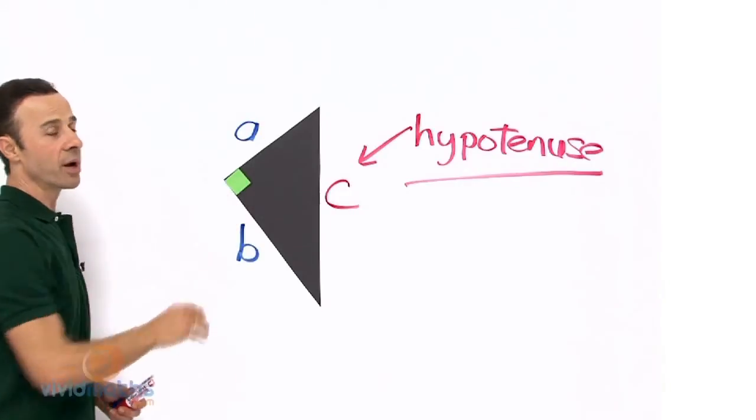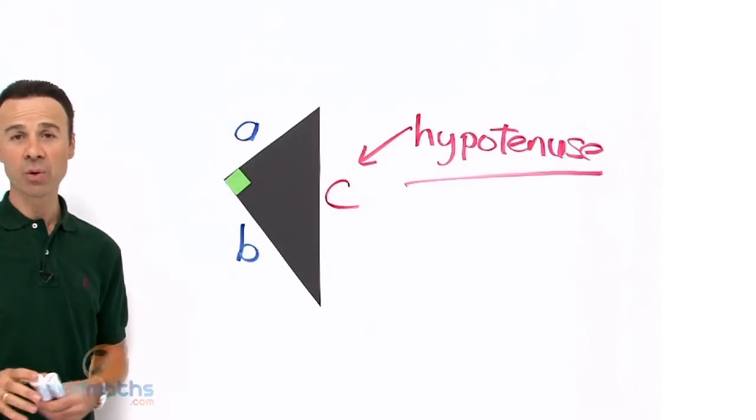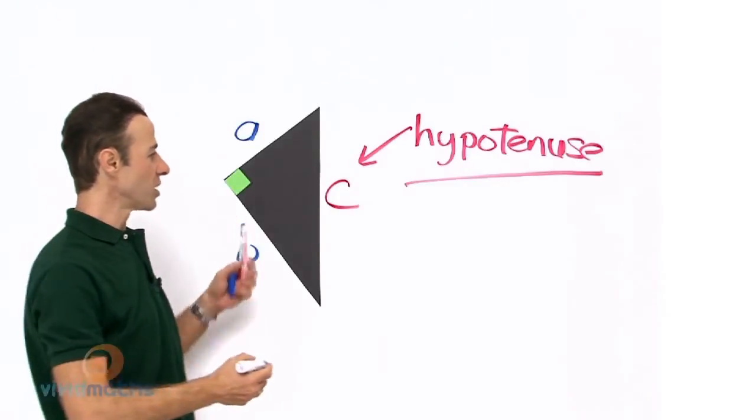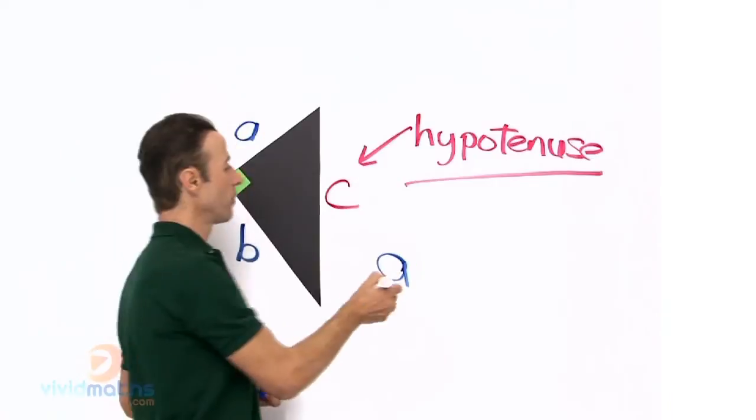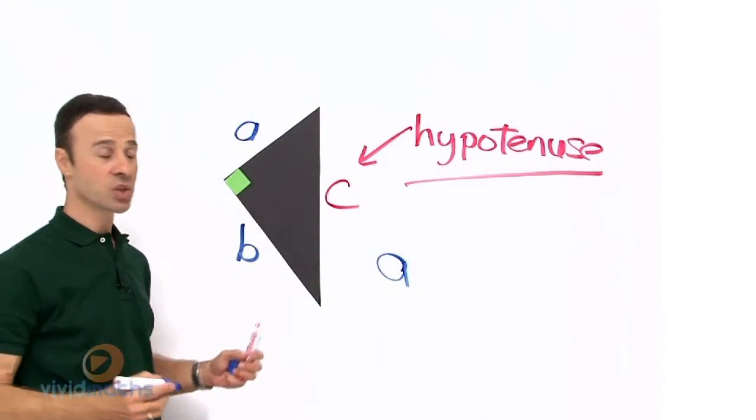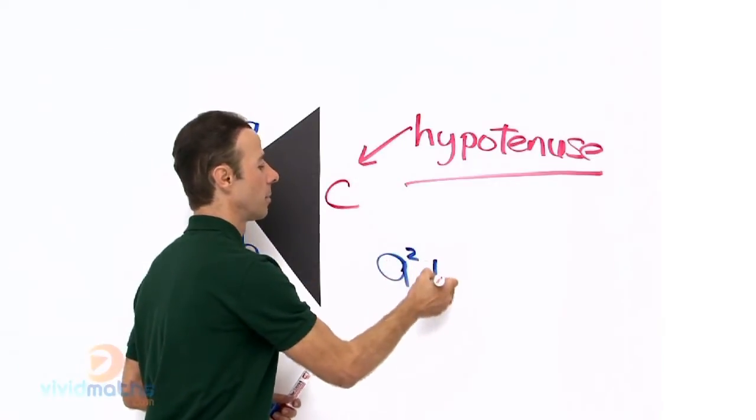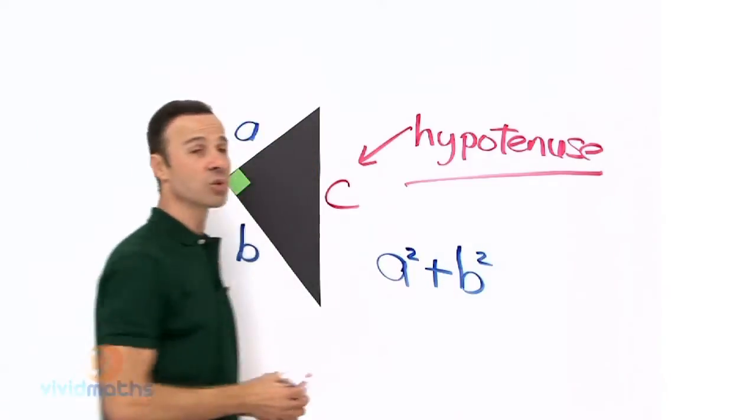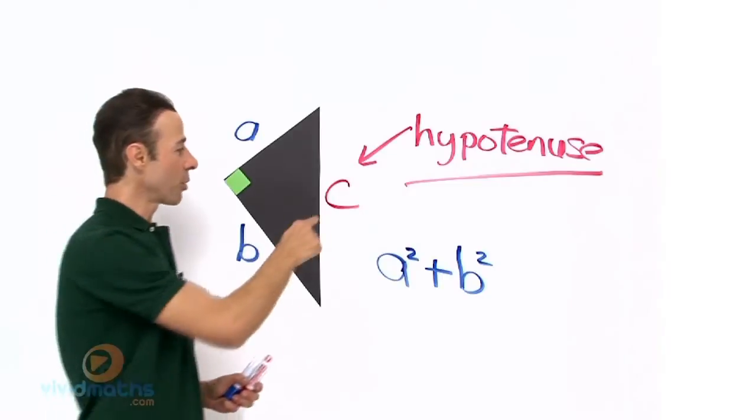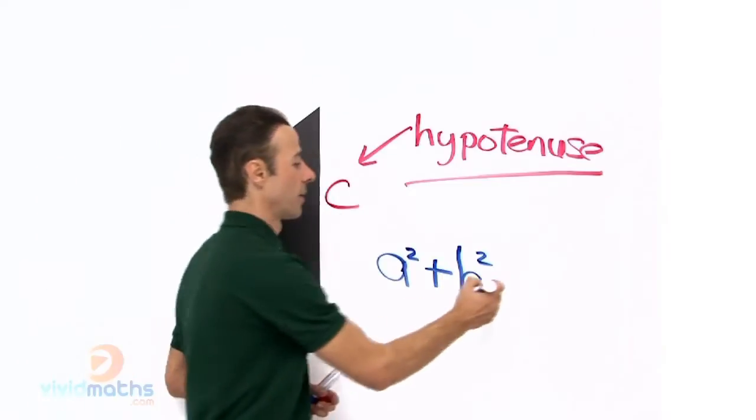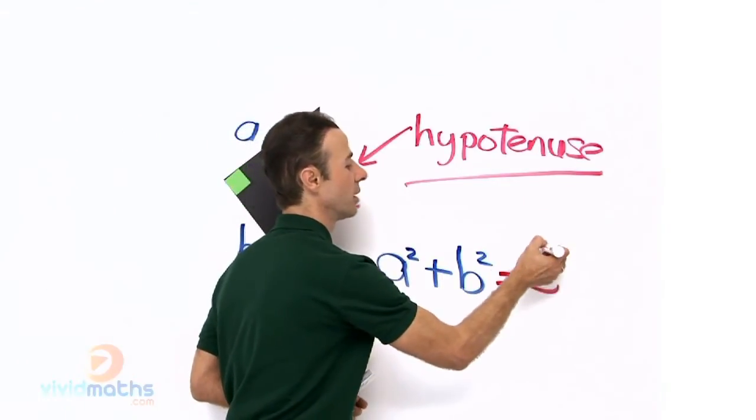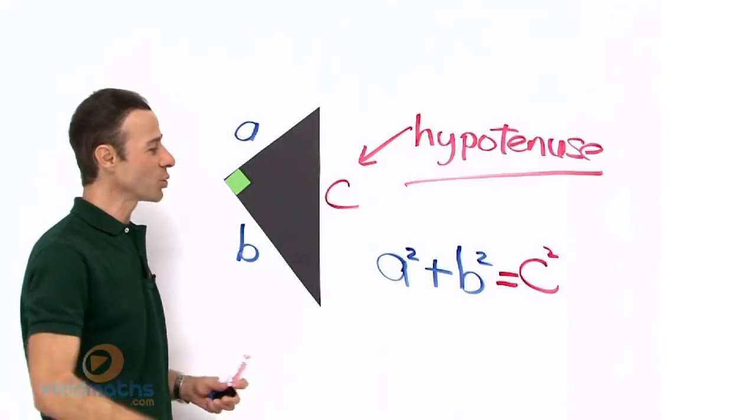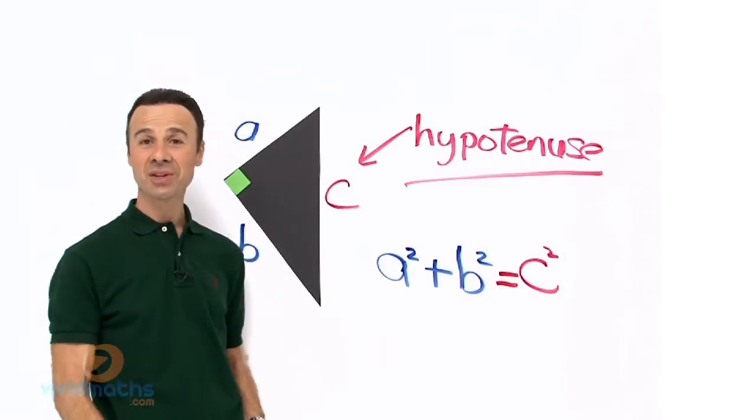So on this triangle the actual formula or the equation for Pythagoras theorem works like this. It is actually the first length here A and then it is squared plus the second length here B and that is also squared and then finally the third length here C, it equals C and that is also squared. That is Pythagoras theorem: A squared plus B squared equals C squared.